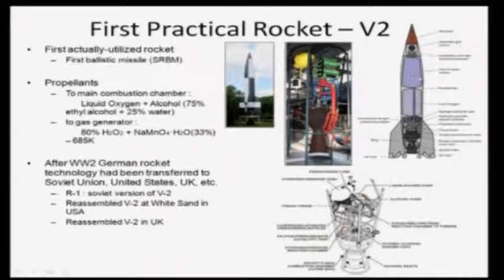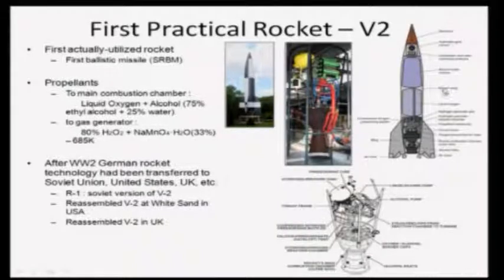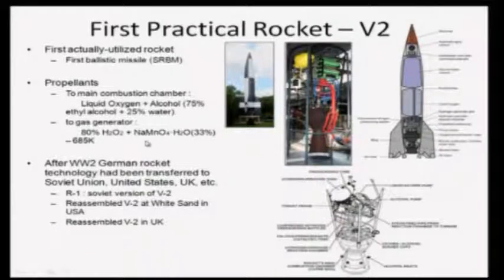A picture of the V-2 rocket is shown here. The propellants to the main combustion chamber were liquid oxygen and alcohol — 75 percent ethyl alcohol and 25 percent water mixture. The gas generator used 80 percent H₂O₂ and NaMnO₄·H₂O, reaching a temperature of 685 Kelvin, which ran the turbopump that fed propellant to the main combustion chamber. The main propellants were essentially liquid oxygen and alcohol.